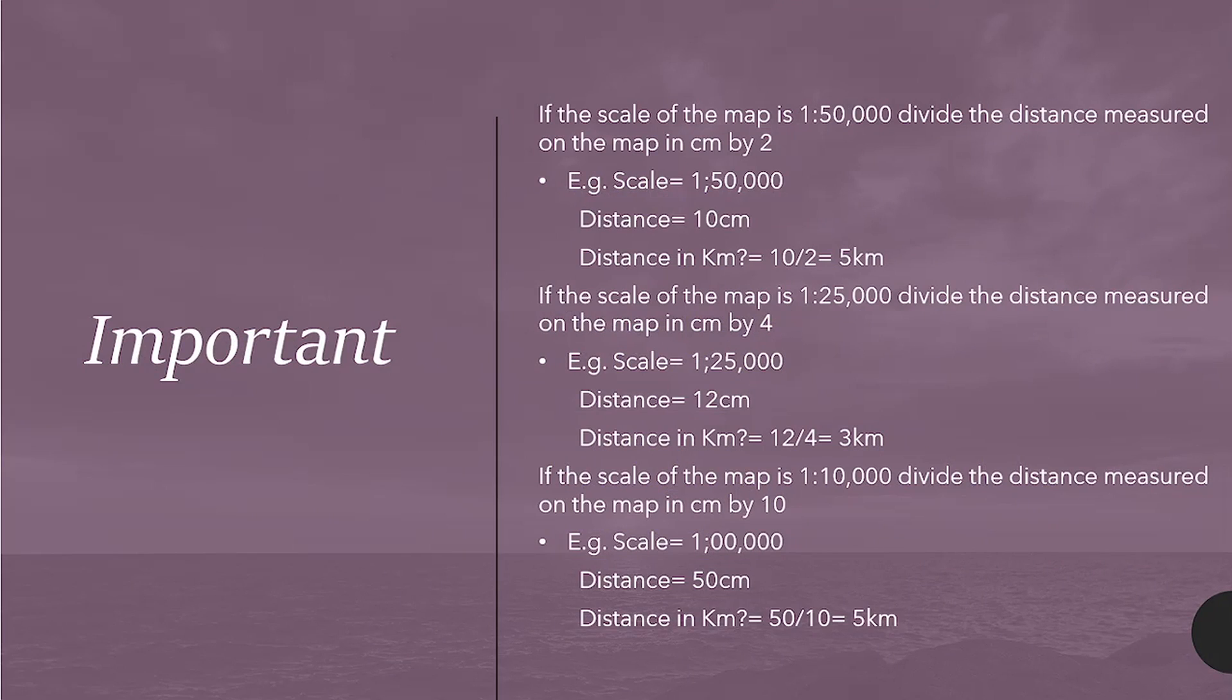As the scale of the map is 1 to 50,000 you would divide the distance measured in the map by 2. For example, the distance would be 10 centimeters. The distance in kilometers would be 10 divided by 2. That's how you get it in kilometers. As the scale on the map is 1 to 25,000, you would divide it by 4. You can see the distance is 12 centimeters. It will be 12 divided by 4 equals 3 and so on. And 1 to 10,000 you would divide the distance measured by 10. These are calculations you need to remember how to convert centimeters into kilometers for the exam.